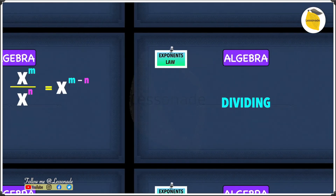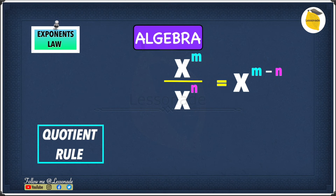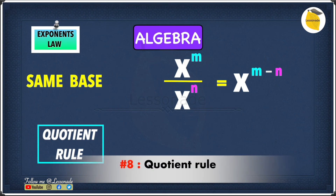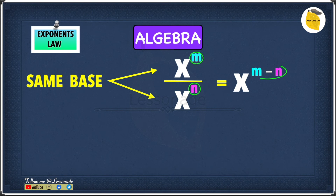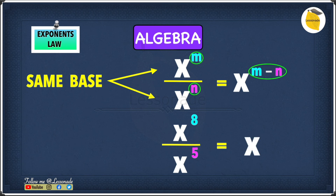Now let's look at dividing. The first rule is called the quotient rule. When you have the same base but different exponents, you keep the base the same and subtract the exponents: x to the power of m divided by x to the power of n equals x to the power of m minus n. For example, x to the power of 8 divided by x to the power of 5: 8 minus 5 equals 3, so the answer is x to the power of 3.